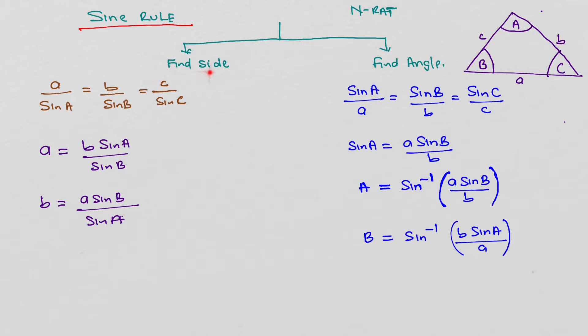So to find the side or you can find the angle. To find the side we write a formula this way. We put the side on top and put the sine of the angle below. And to find angle we put the sine of the angle on top and the side below.